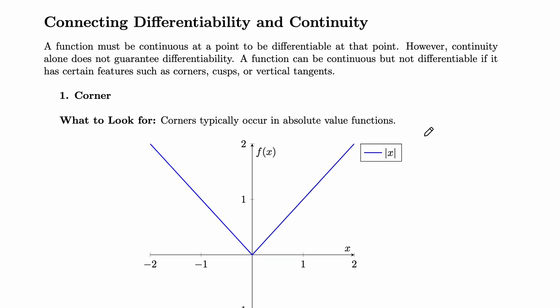Differentiability and continuity. Okay, so a function must be continuous at a point to be differentiable at that point. So what does that mean? That means that if we know the function is differentiable at the point, we know it is continuous at the point. So I like to think of this as kind of like a set where continuity is on the outside and then differentiability is on the inside. So again, if differentiable, then continuous. However, if continuous, it might be differentiable. We don't know for sure because there are all these things that can exist here that are not inside the differentiability bubble.